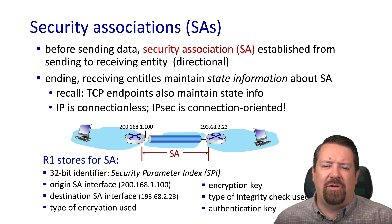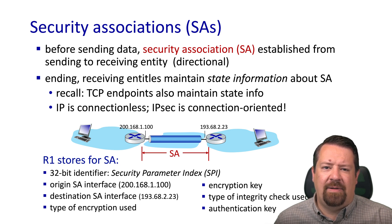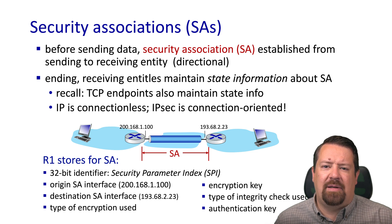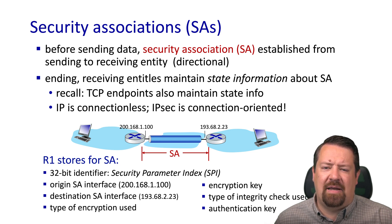If we look at what router R1 is required to store for a security association, it includes an identifier, the origin interface on R1 from which this association will originate, and the destination interface on R2 to which this association will connect. Then we have the type of encryption used, because the standard supports plugging in different encryption algorithms. Then we have the encryption key for the association, the type of integrity check used, and the authentication key. Best practices dictate that we use different keys for different parts of the security mechanism.